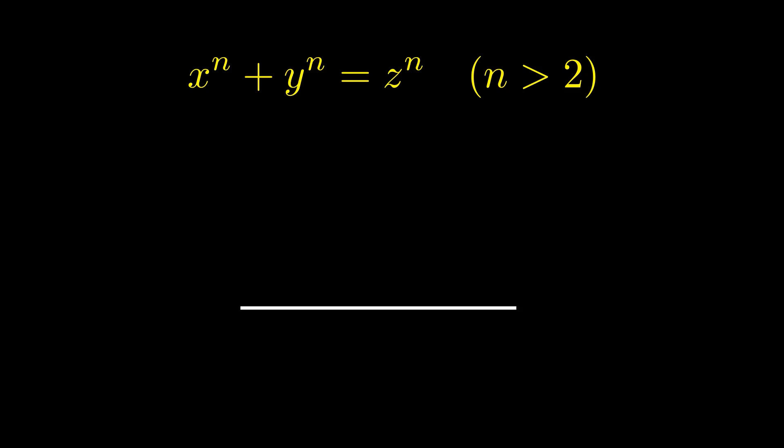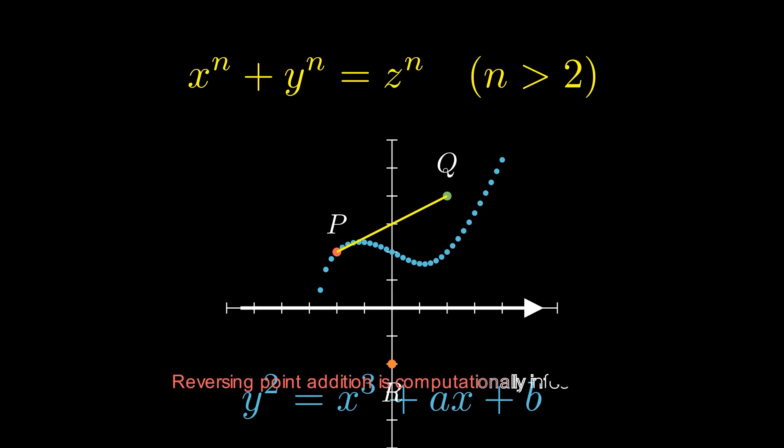Its efficiency and security make it ideal for modern applications such as securing digital wallets and messaging systems. Here is a graphic representation of the two points on the curve, represented by p and q.